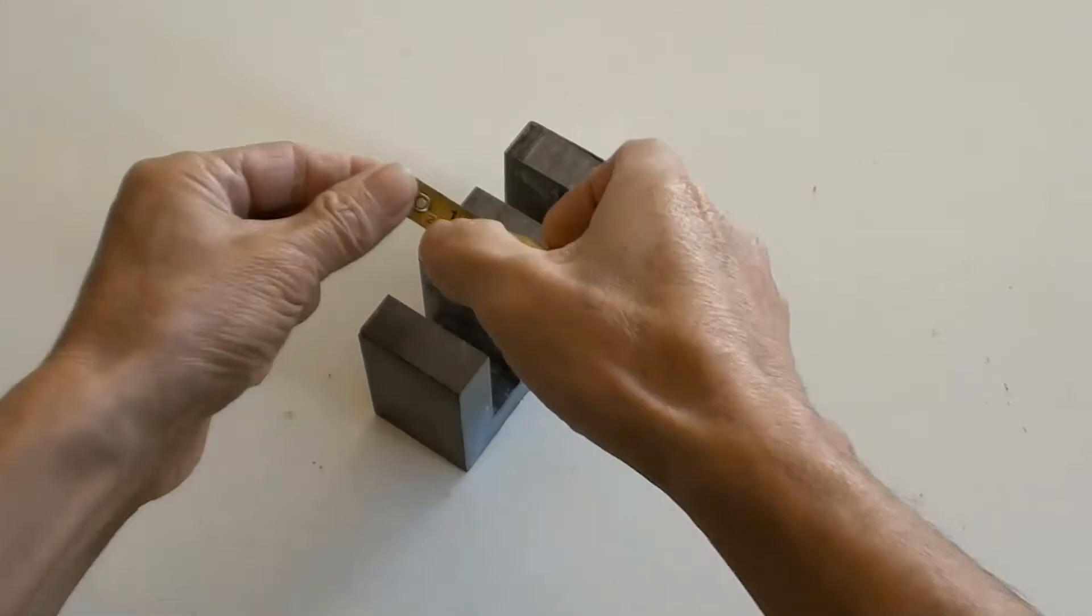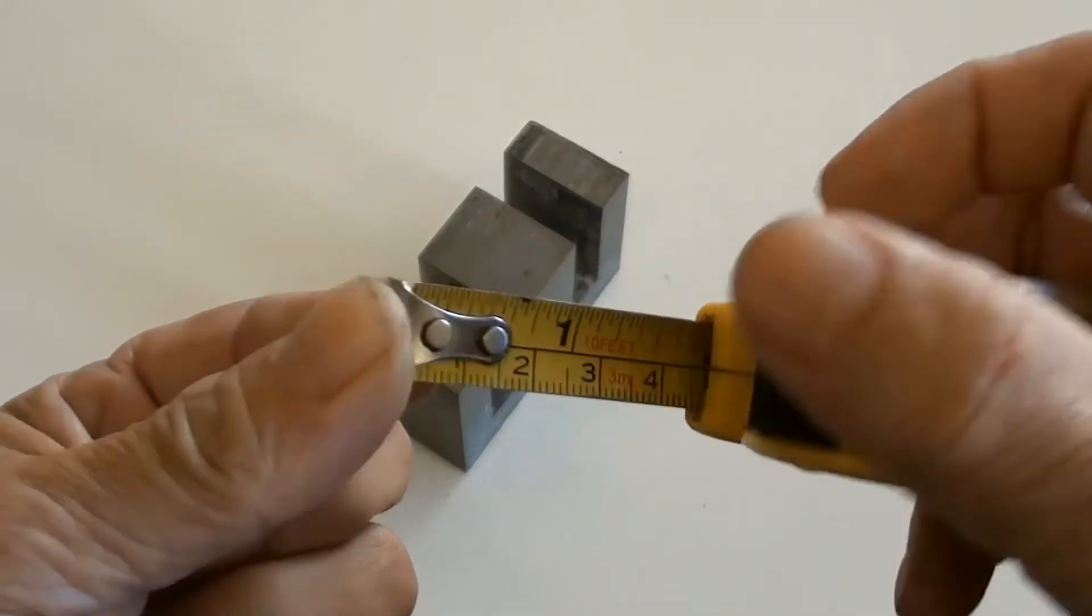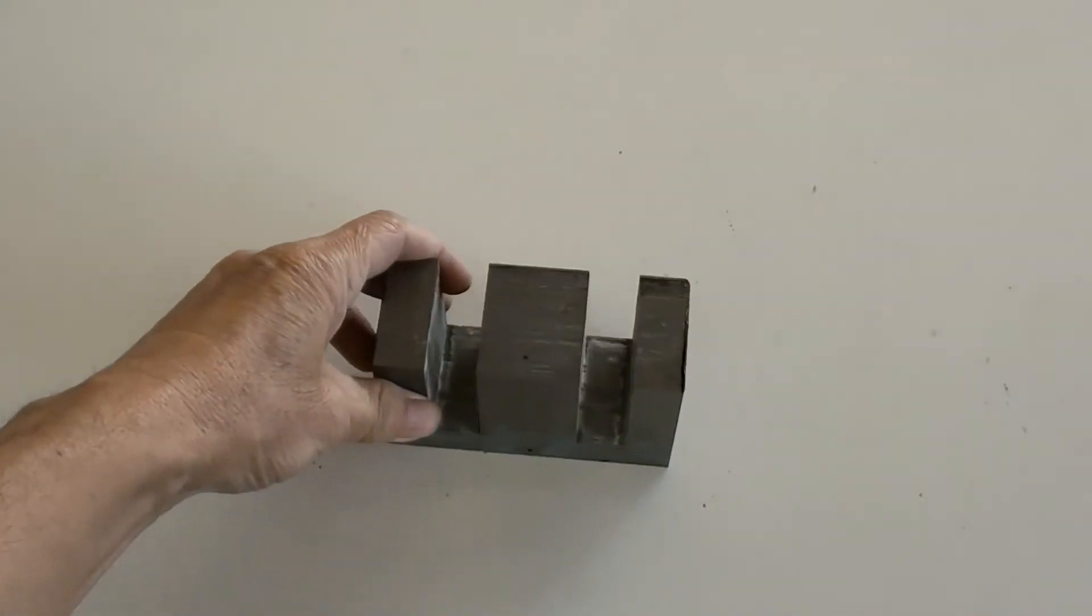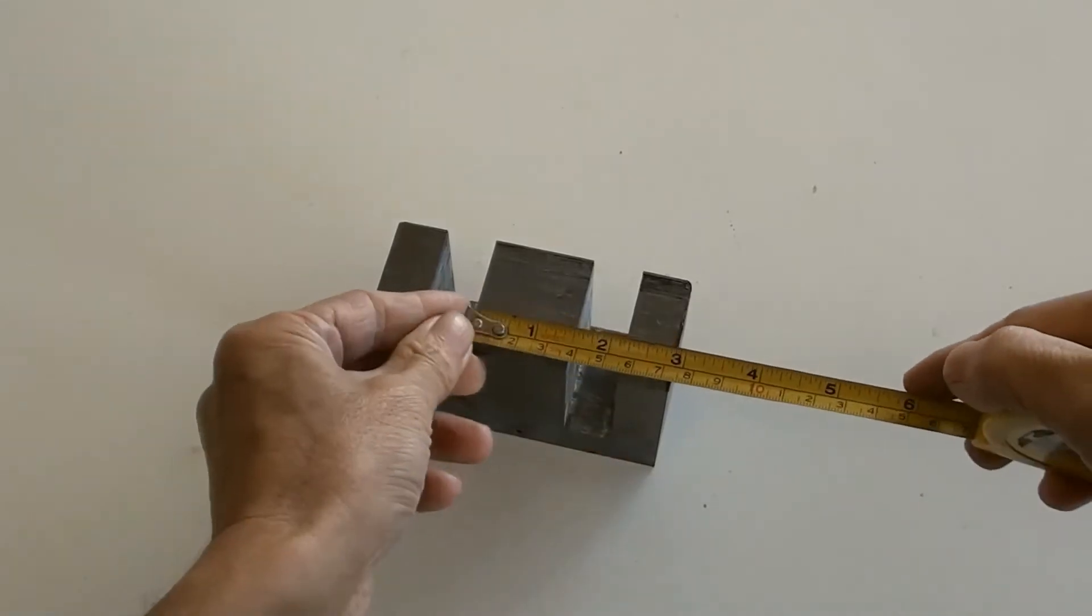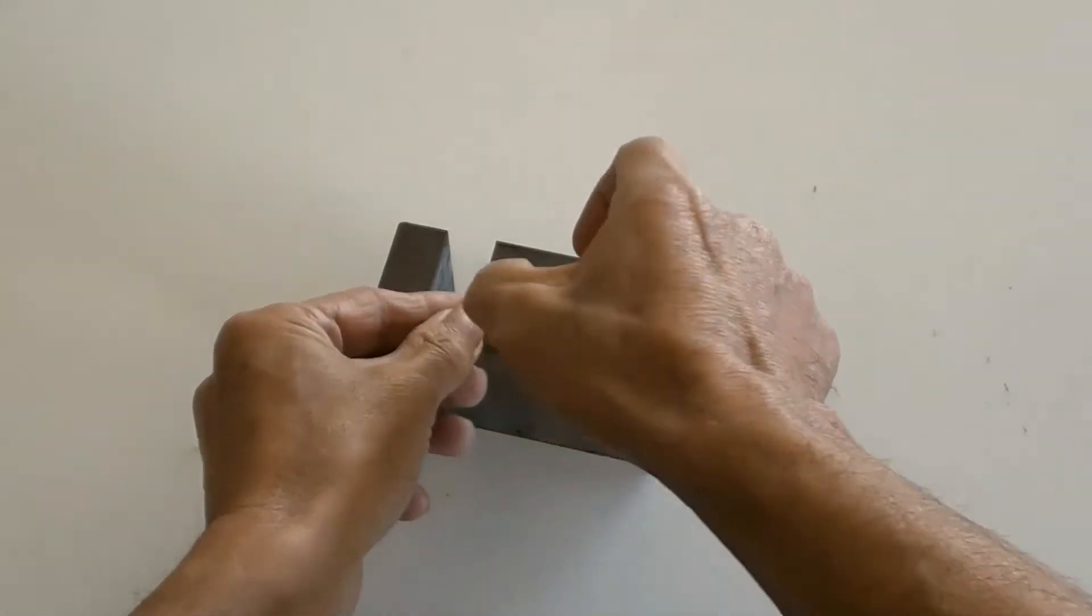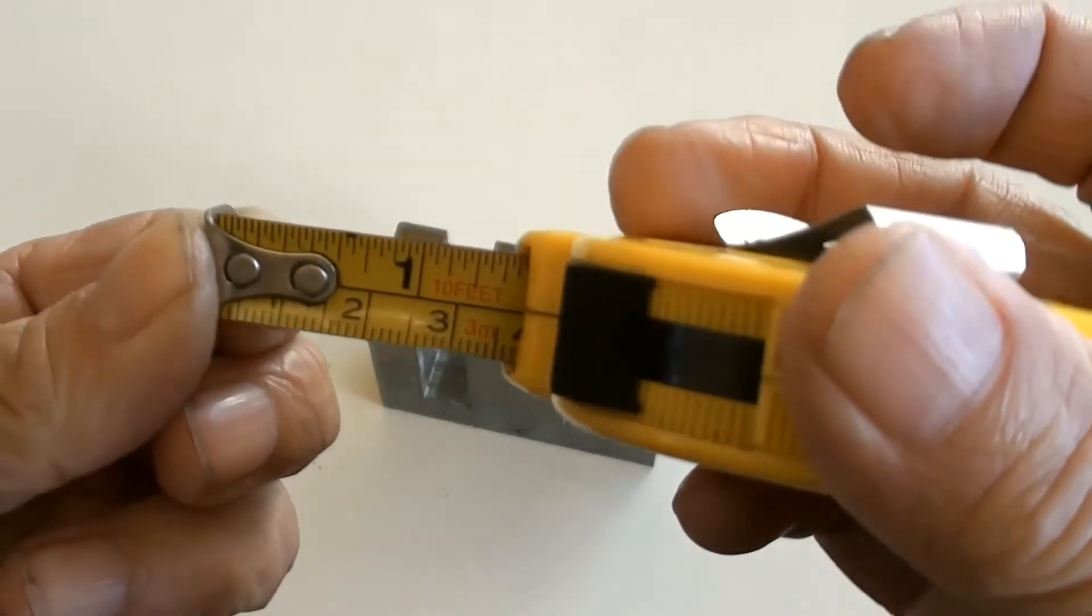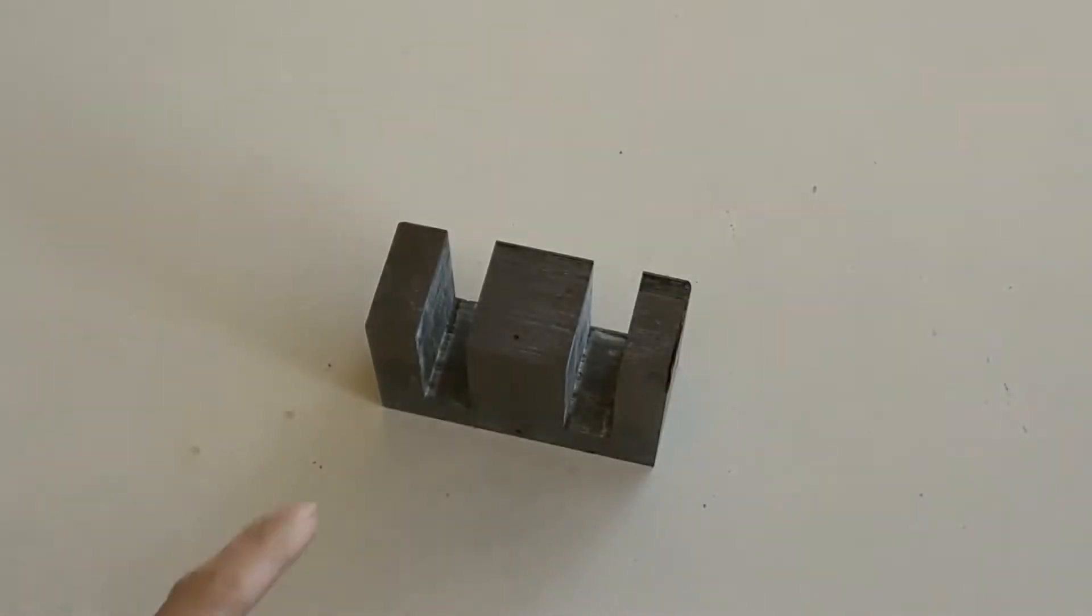Measuring the core size. Core depth is 4.3 cm, core width is 3.5 cm. So depth is 4.3 cm and width is 3.5 cm.